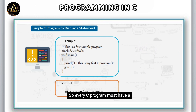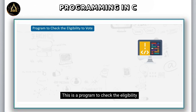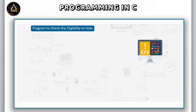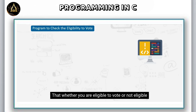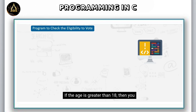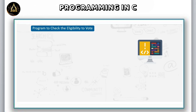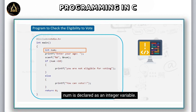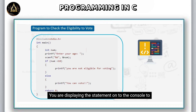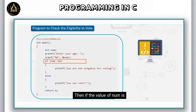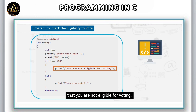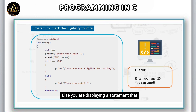This is a program to check the eligibility to vote. The logic is to display a statement whether you are eligible to vote or not. If the age is less than 18, you are not eligible for voting; if the age is greater than or equal to 18, you are eligible to vote. We have a main function where num is declared as an integer variable. A statement is displayed on the console to enter the age, the value is read through a scanf statement, and then if num is less than 18 a message is displayed that you are not eligible for voting, else it displays that you can vote.